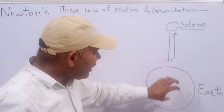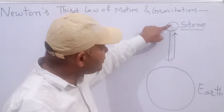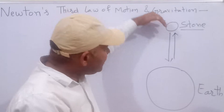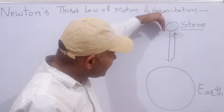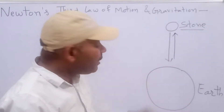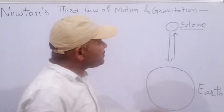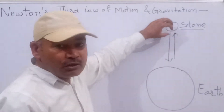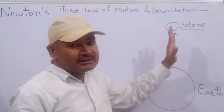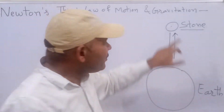Earth is exerting the force on this stone or this small object towards the center of this Earth. But this stone or this object also exerts the force in opposite direction.